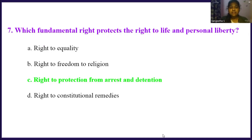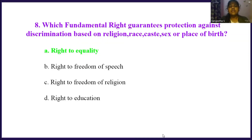This fundamental right guarantees protection against discrimination based on religion, race, caste, sex, or place of birth. Option A, right to equality. Option B, right to freedom of speech. Option C, right to freedom of religion. Option D, right to education. The right answer is option A, right to equality.